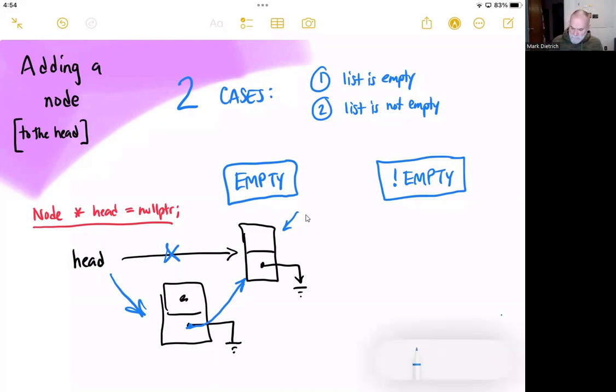We're keeping the linked list intact so that there is a pointer that can actually traverse the entire linked list. So that's adding a node to the head.